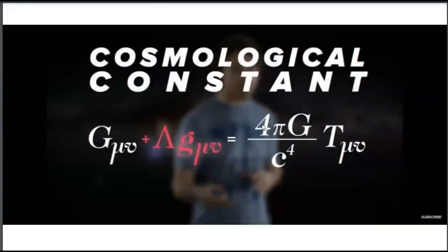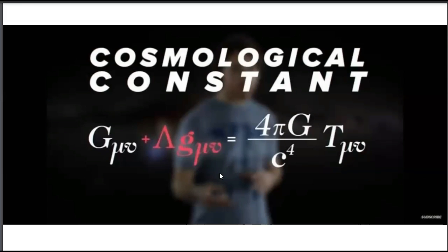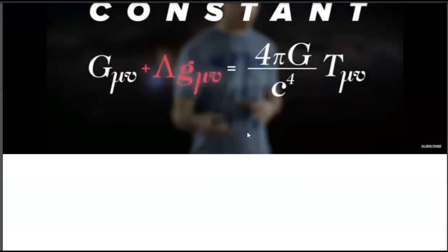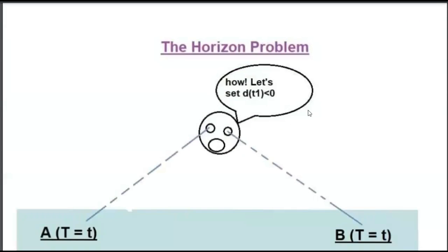Before telling the solution to the problem, I would like to explain what those problems mean. The cosmological constant was not originally in Einstein's equation when it was believed the universe was static. But as scientists came to know that the universe is expanding, Albert Einstein added this cosmological constant — which he thought to be his greatest error, but it actually helps scientists today to eliminate errors in readings from experiments regarding universal expansion.